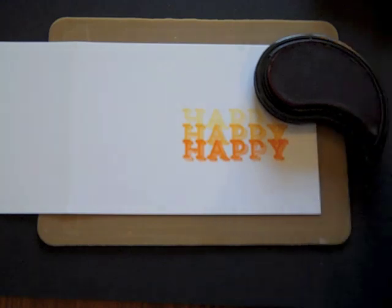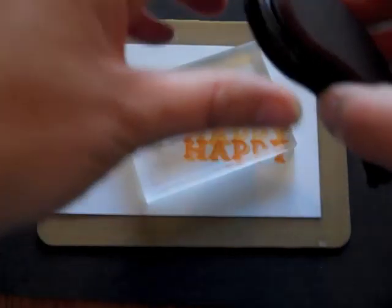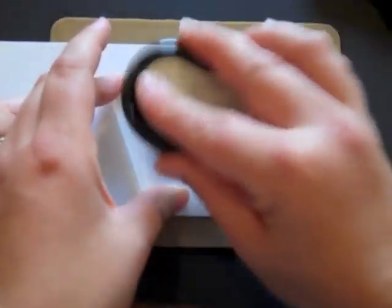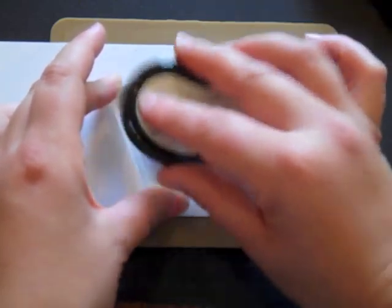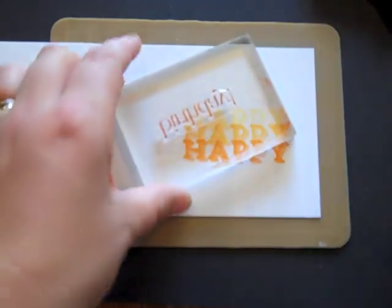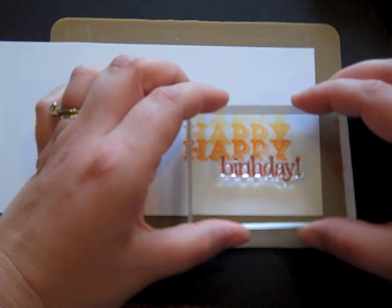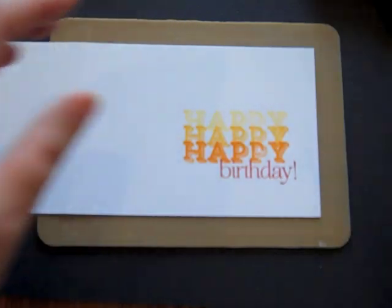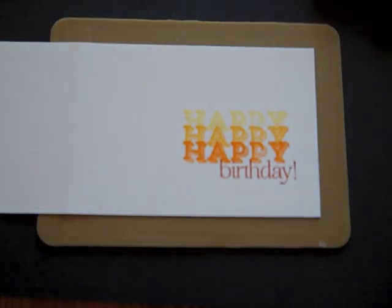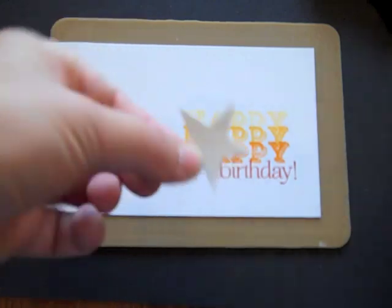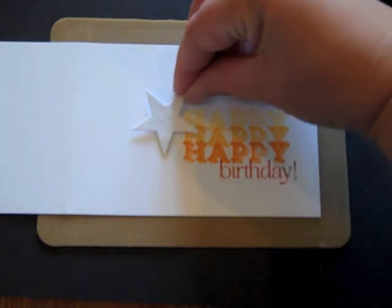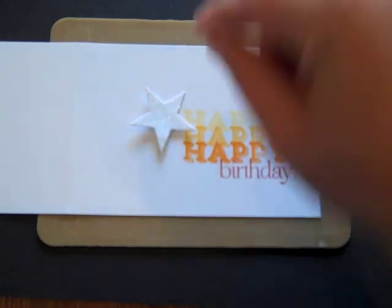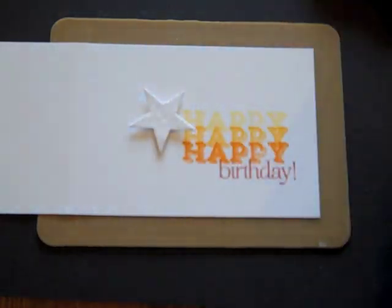And I'm going to go back in with terracotta tile and this birthday word from the same set, Stylish Cinnamon's Birthday. I'm going to add that right here. And I'm also going to add a glitter star. I just cut this from white cardstock using the Seeing Stars die, the smallest one, and I covered the die cut with Prismaglitter.